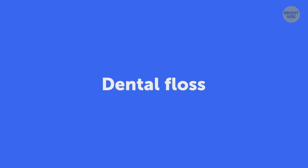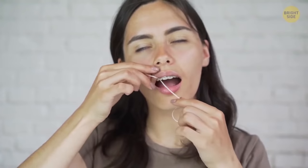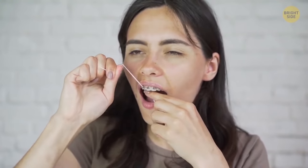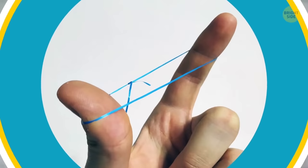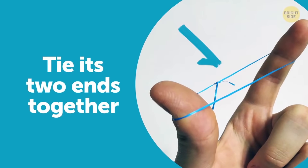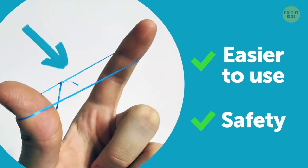This dental hygiene must-have can slip out of your fingers and tangle. To avoid such problems, tear off a piece of floss and tie its two ends together. It'll be much easier to use and won't hurt your hands.